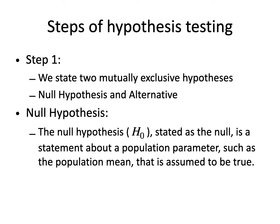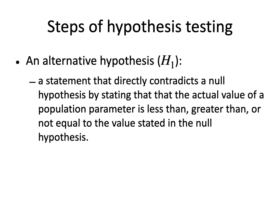The alternative hypothesis is written as H₁ or Hₐ. It is any hypothesis complementary to the null hypothesis, or a statement that directly contradicts the null hypothesis by stating that the actual value of the population parameter is less than, greater than, or not equal to the value stated in the null hypothesis.